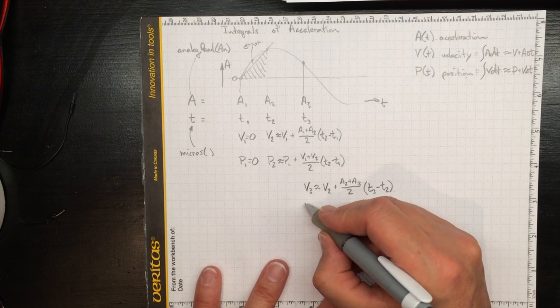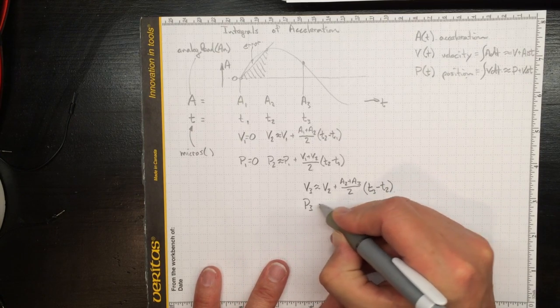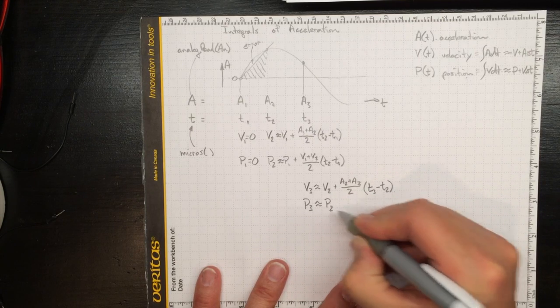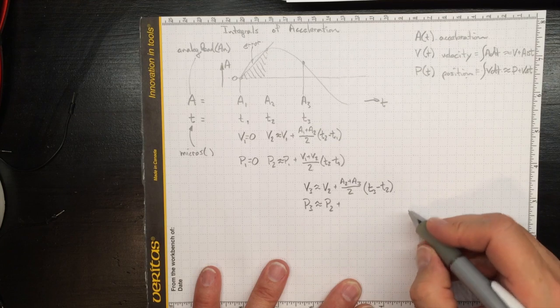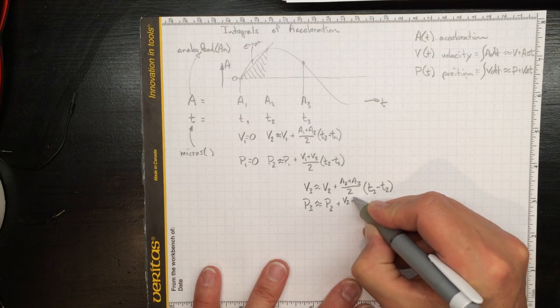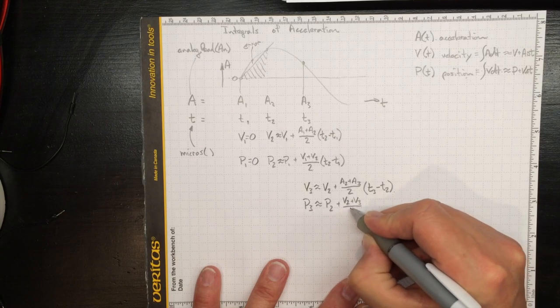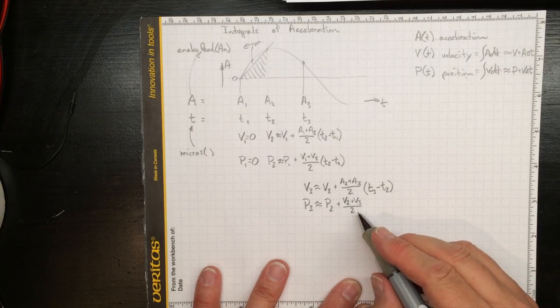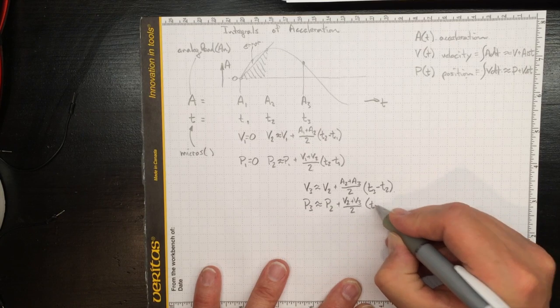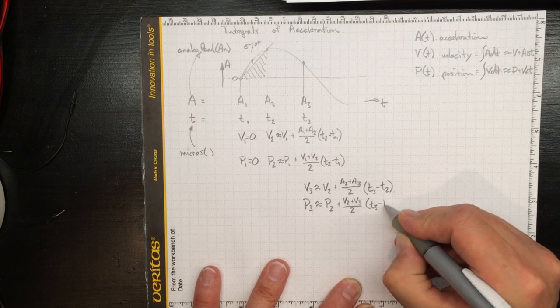And then we can also get position at three estimated as whatever the position was at two plus the velocity at two plus the velocity at three divided by two, some average of the velocity, times delta t, t3 minus t2.